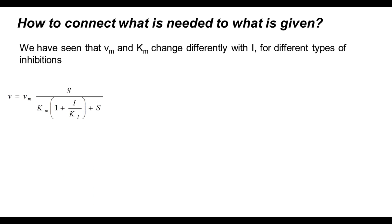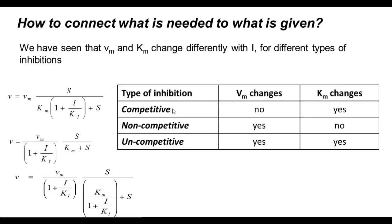For the competitive inhibition, V equals Vmax S by Km times (1 plus I by Ki) plus S. The Km gets modified. For the non-competitive inhibition, the Vmax gets modified. And for the uncompetitive inhibition, both Vmax and Km got modified in this fashion. This is a summary.